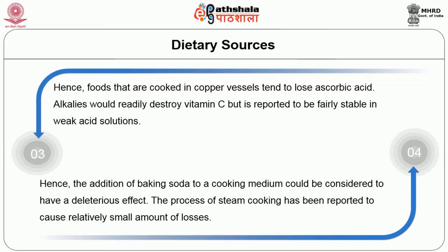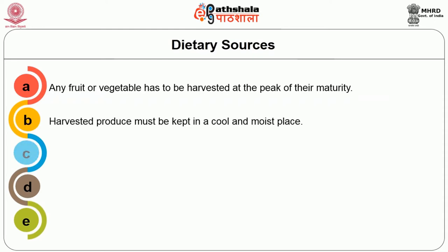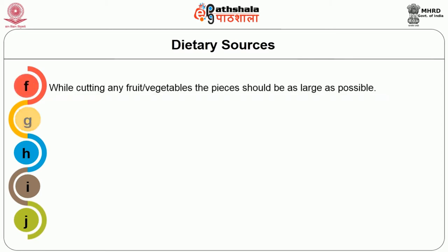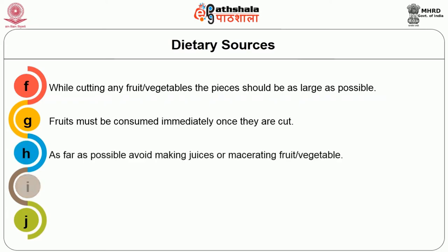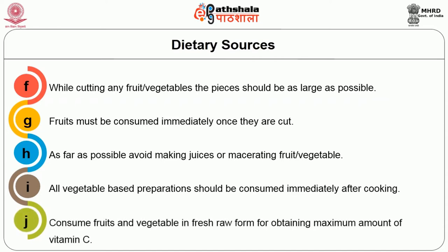Several measures can be adopted to maximize the vitamin C content of food materials. Any fruit or vegetable has to be harvested at the peak of maturity. Harvested produce must be kept in a cool and moist place, and direct exposure to air and sunlight should be avoided. Do not soak cut fruits and vegetables in water for prolonged periods. Use a minimum amount of water for cooking. While cutting, the pieces should be as large as possible. Fruits must be consumed immediately once they are cut. Avoid making juices or macerating fruit or vegetable. All vegetable-based preparations should be consumed immediately after cooking. Consume fruits and vegetables in fresh raw form for obtaining the maximum amount of vitamin C.